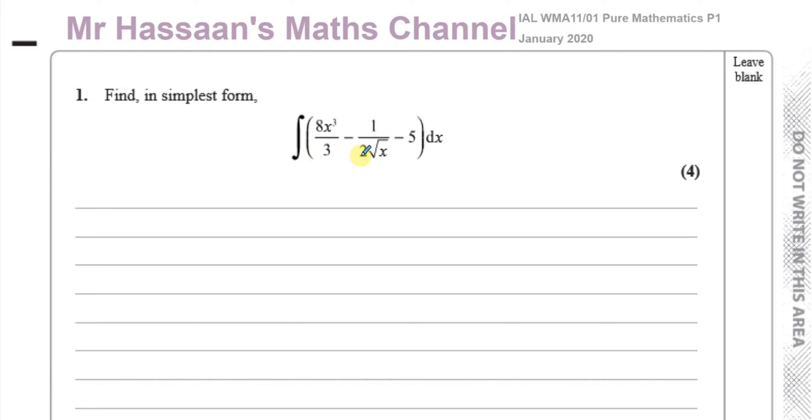The first term is fine. It's the second term which has a problem. We have to rewrite this so that we can integrate it. And 1 over 2 times root x is the same as saying 1 over 2 times x to the power of a half. Now we have to have the x to the power of a half on the numerator. So this is x to the power of negative a half over 2.